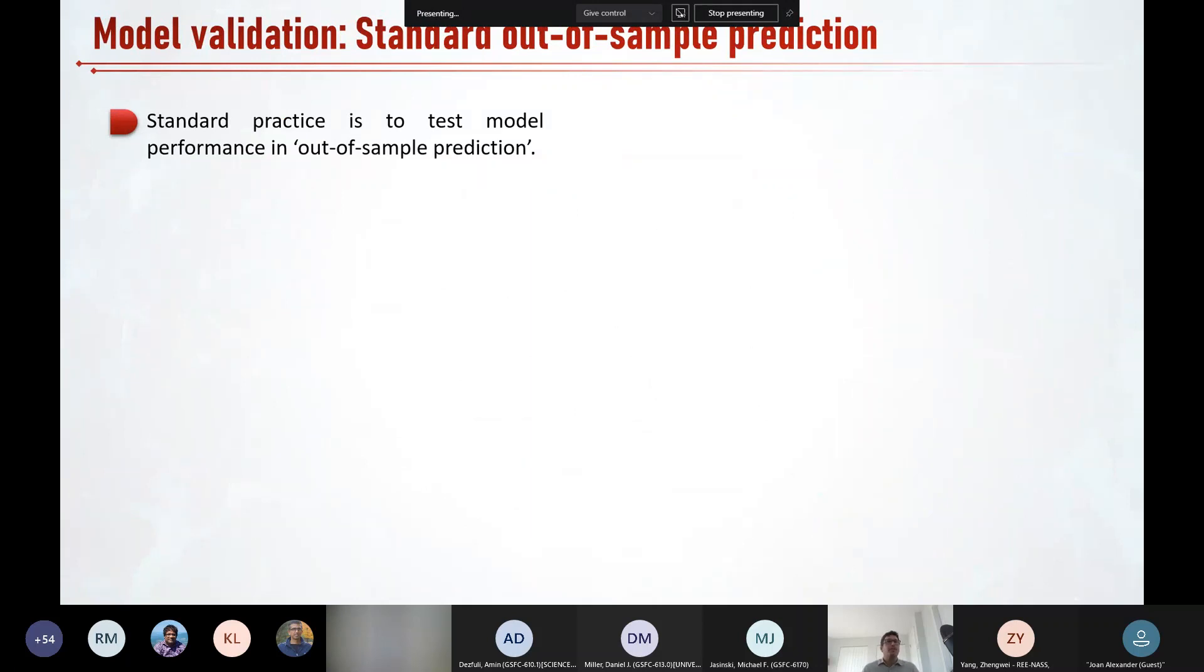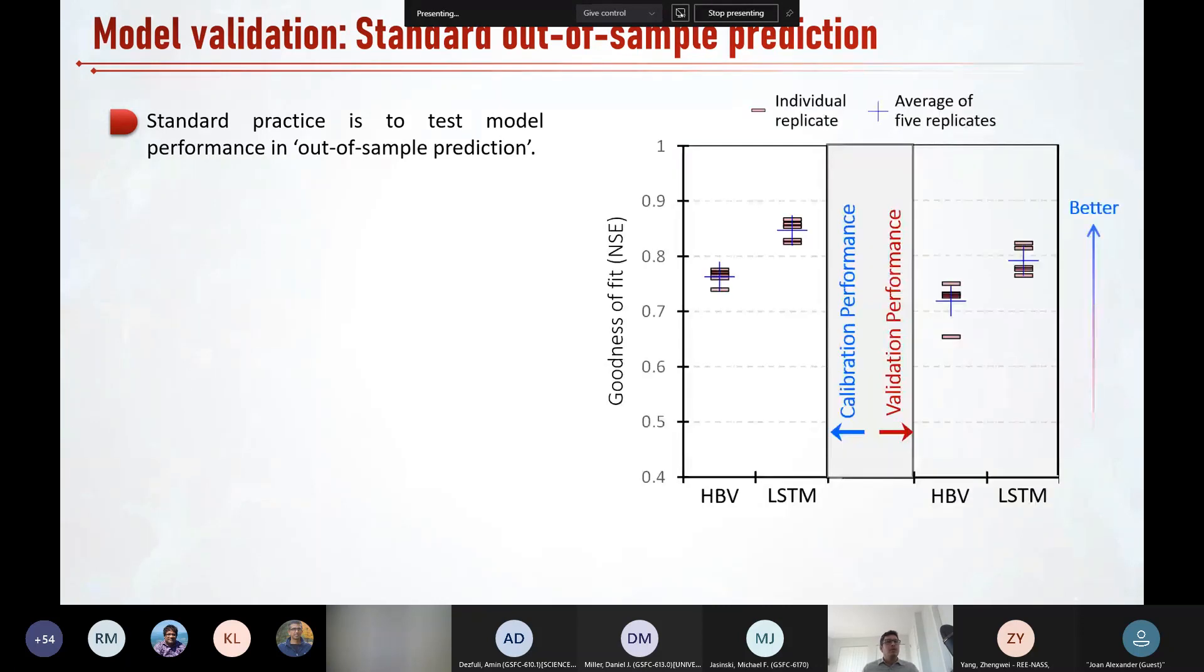So the standard practice for validation of a model is to test its performance in terms of reproducing some historical record not seen during model calibration. A process typically called out of sample prediction. This plot shows the result of such practice in the validation period for both the LSTM and HBV models. In this case, both models do reasonably well according to NSE. But LSTM here outperforms HBV across all five replicates. Consistent with what we just saw, the hydrologist literature is full of such conclusions that ANNs are superior to process-based models in both calibration and validation. So is this the end of the story?